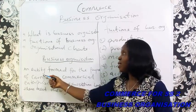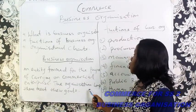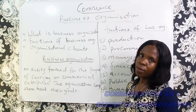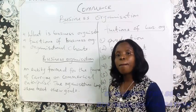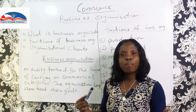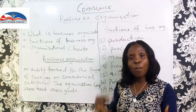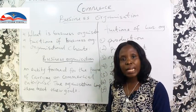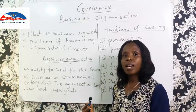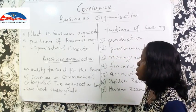A business organization is an entity formed for the purpose of carrying on commercial enterprise. The organization helps them meet their goals. Every business has an objective, a goal they intend to meet — among these goals is to maximize profits, to expand, to work efficiently, to be effective, to compete better in the market, to plan, to direct, to organize, and to get all these together to achieve the objective goals of the organization.